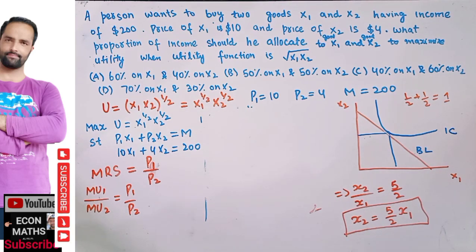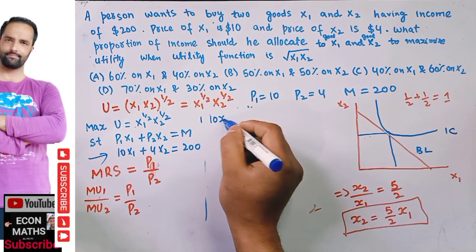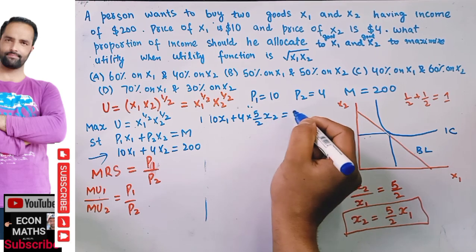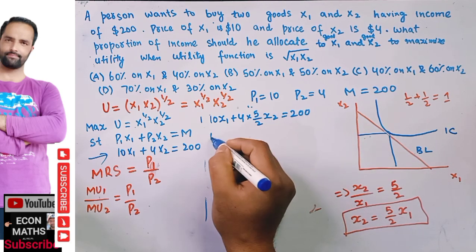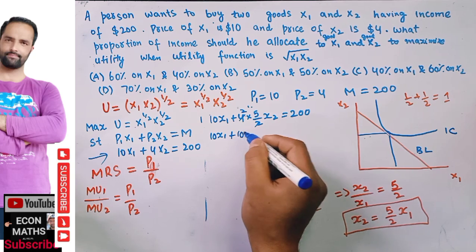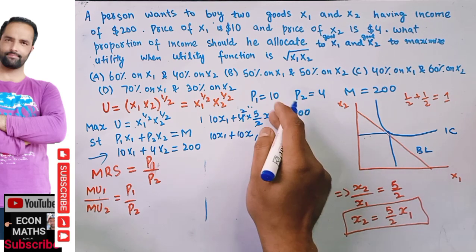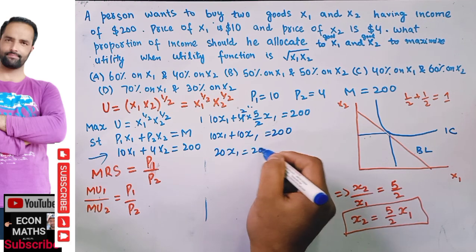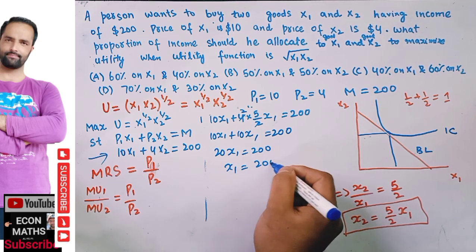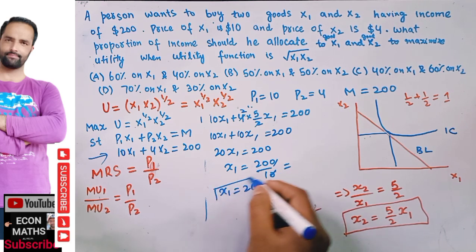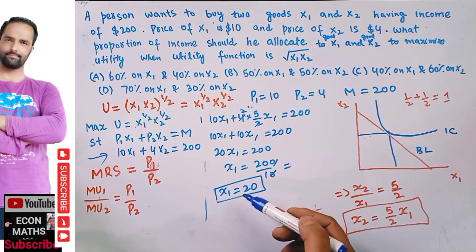Now substitute X2 = (5/2)X1 into the budget constraint: 10X1 + 4·(5/2)X1 = 200, which gives 10X1 + 10X1 = 200, so 20X1 = 200, meaning X1 = 10.